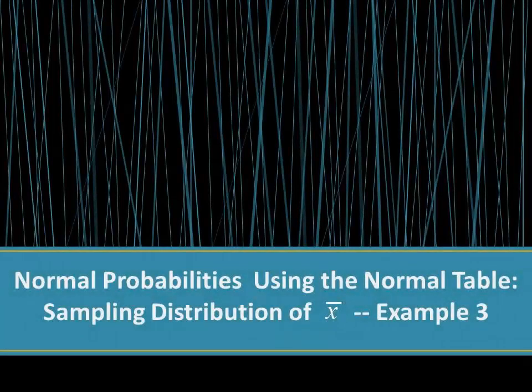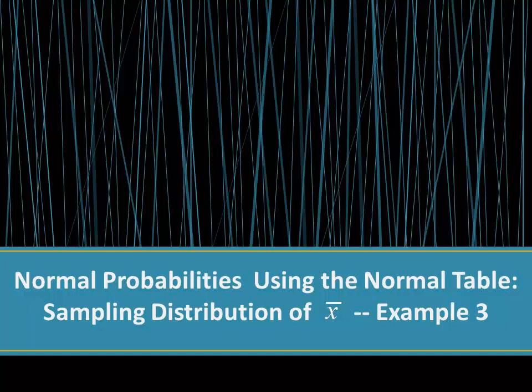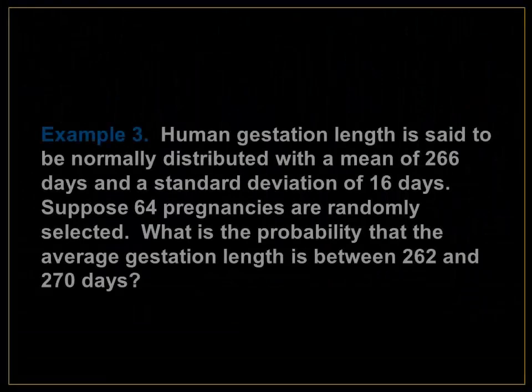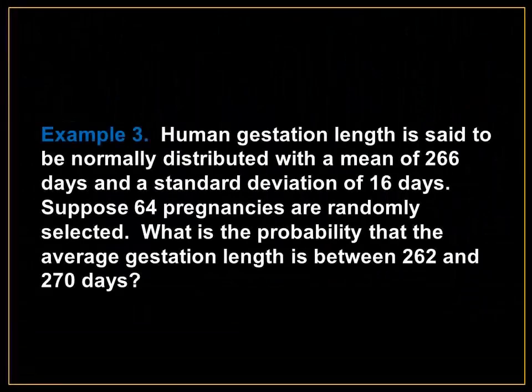Finding probabilities of the sampling distribution of X bar using the normal table. For example: